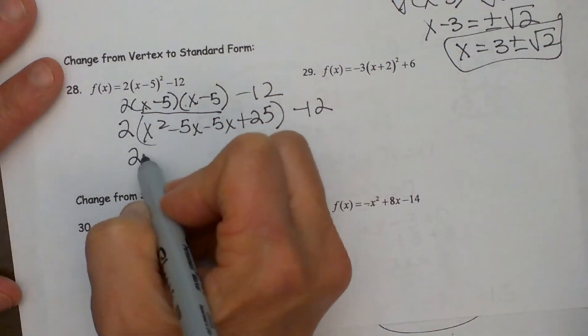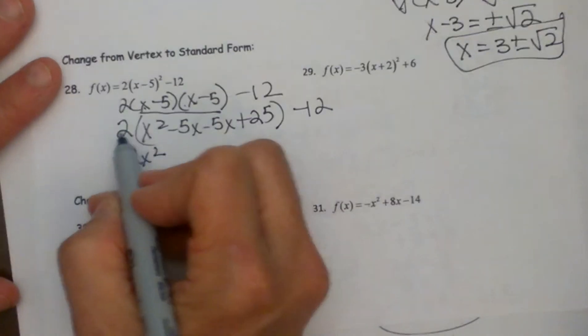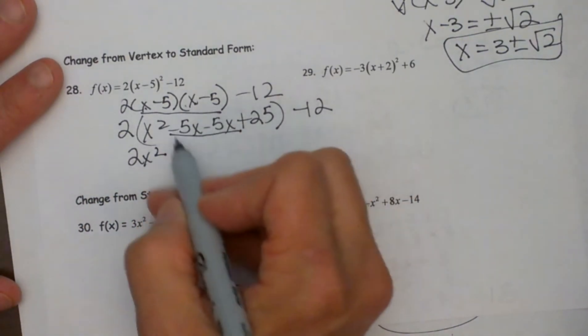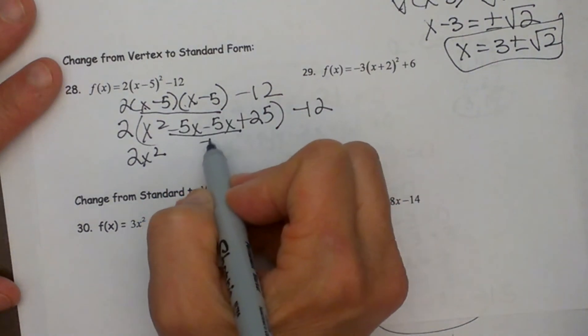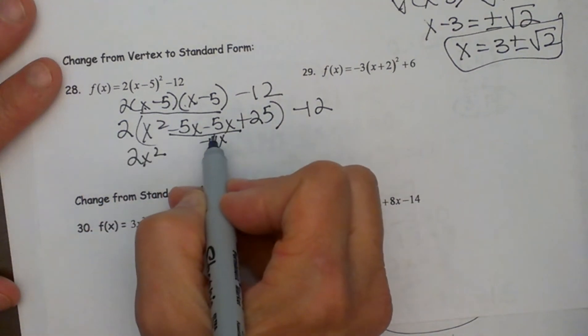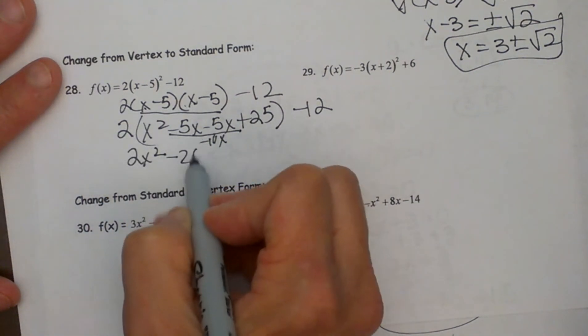2 times x squared is 2x squared and then 2 times negative 5. Now right here I am going to mentally combine that to negative 10x because those are like terms. So now I am going to take negative 2 times that negative 10 and get negative 20x.